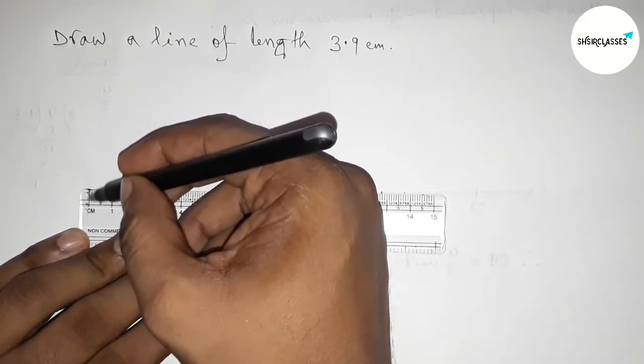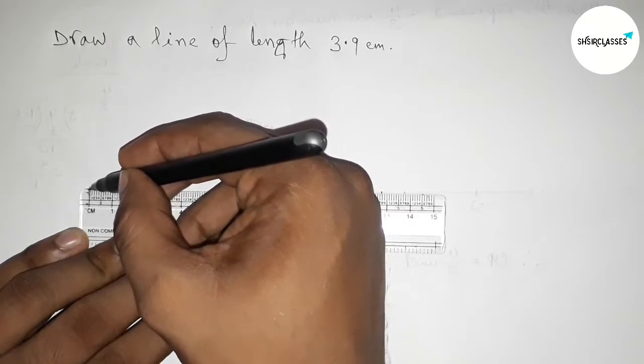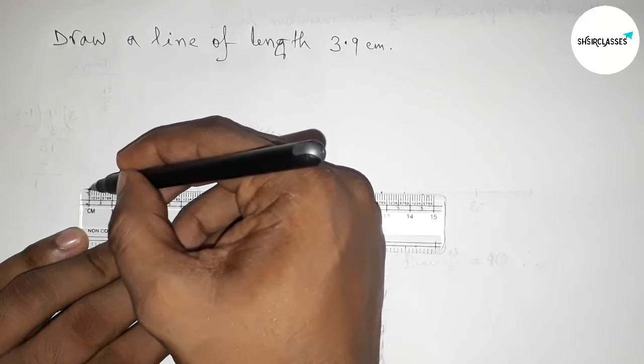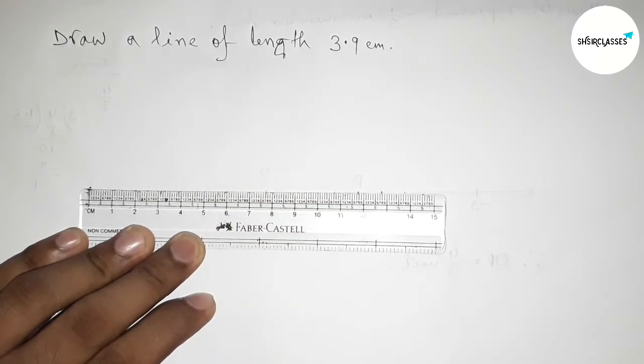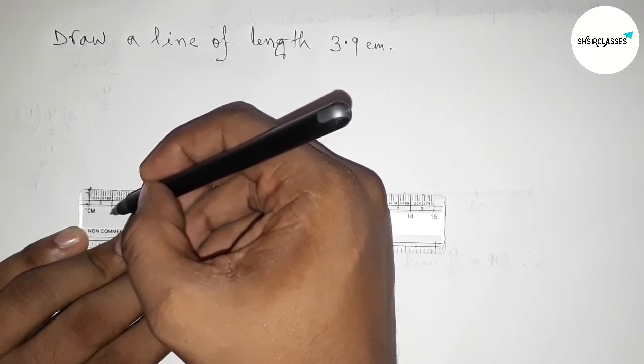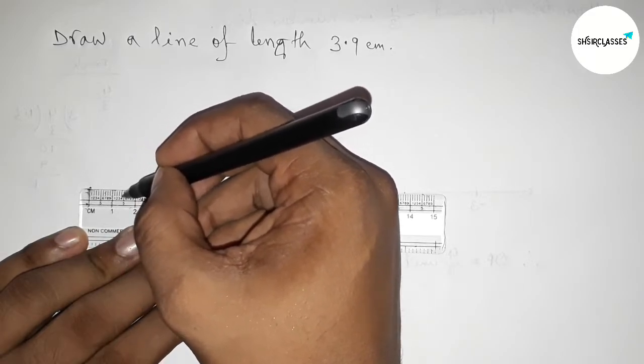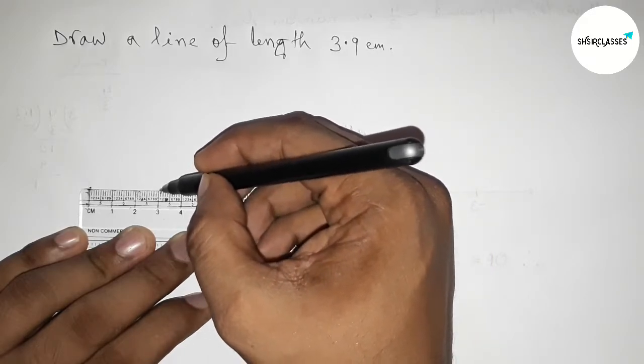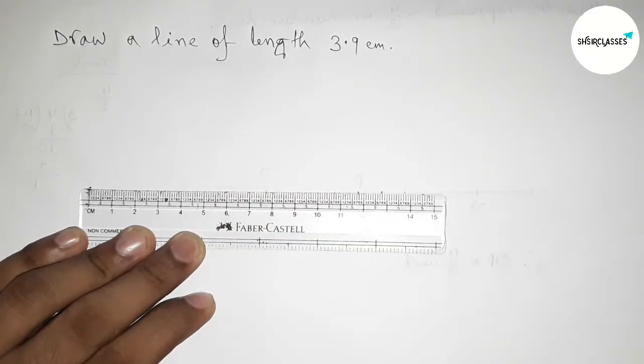This is starting at 0, so first mark this. This is starting 0 and next count 3.9 centimeter. This is 0, 1, and this is 2 centimeter, and this is 3 centimeter, and we have to count 3.9 centimeter.